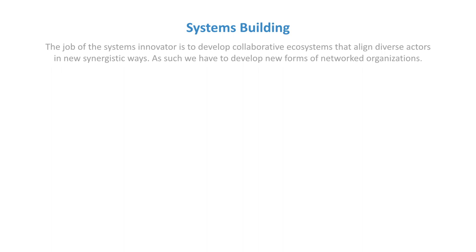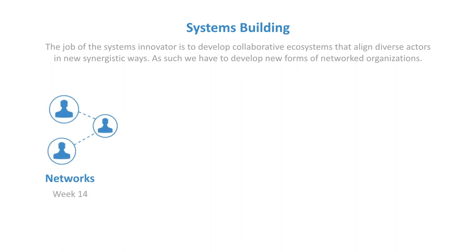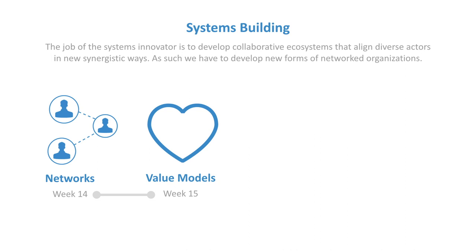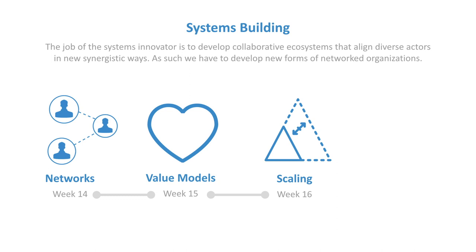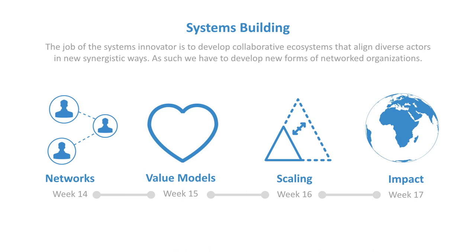The final section is on systems entrepreneurship and building. The job here is to develop collaborative ecosystems that align diverse actors in new synergistic ways to realize the emergence of new macro-level functionality in the system and shift it to a new equilibrium. We talk about networked organizations — the structure of these new ecosystems — and week 15 goes into value models, thinking about how to shift value flow and value networks from individual business models up to whole ecosystem networks, incentivizing the ecosystem toward systemic collaboration. Scaling is the next module, talking about how to scale change and grow networks through a nonlinear networked approach. Finally, impact — how do we assess for and get a learning feedback loop about our interventions and whether we're really achieving the systems change we want.